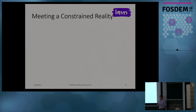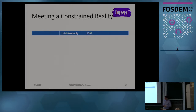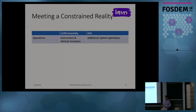LLVM is based on a theoretical model with some characteristics that make it practically impossible to implement directly. So we need to think about how to constrain ourselves to implement an instruction set architecture for LLVM. The first thing is operations: LLVM assembly has instructions and intrinsic functions, and we provide semantically matching operations in ISA-L.